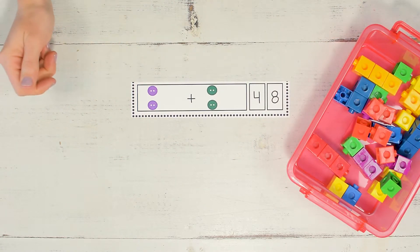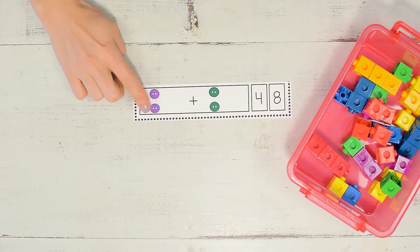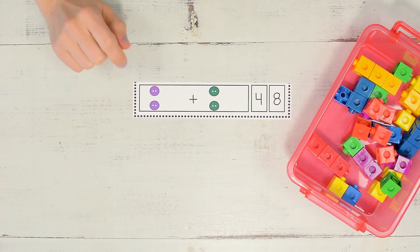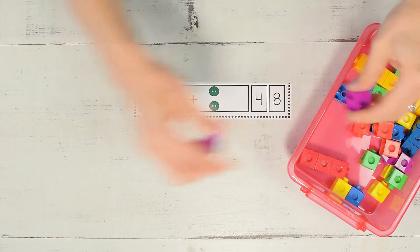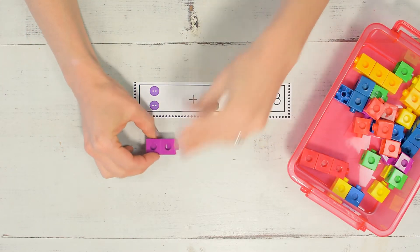Let's do one more. How many purple buttons do we have? One, two. Let's find our purple snap cubes and snap together two.